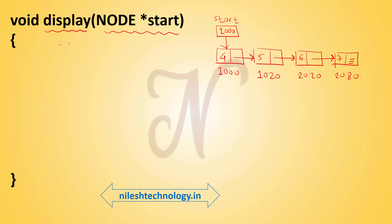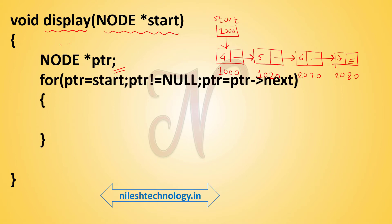By using a ptr pointer we print the total linked list. See here — this is my for loop. In the for loop there are three expressions: expression 1, expression 2, and expression 3. These three expressions are separated by semicolons, and here there is no semicolon at the end of the for loop.